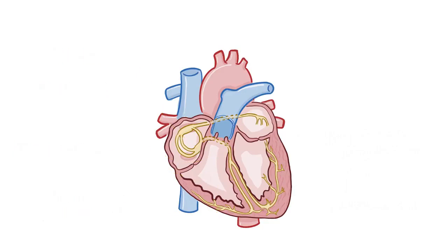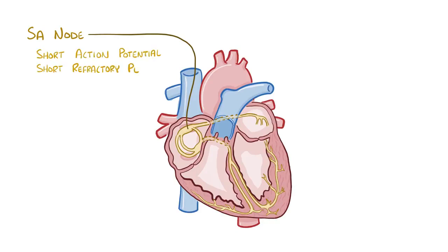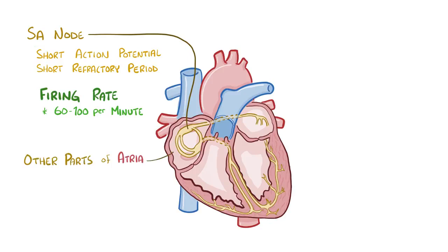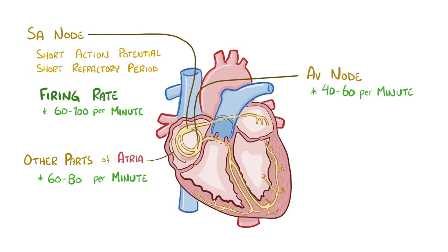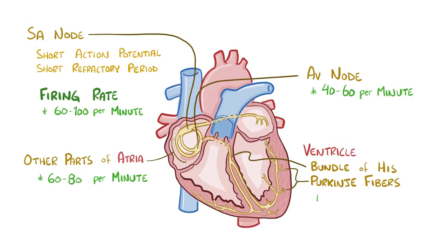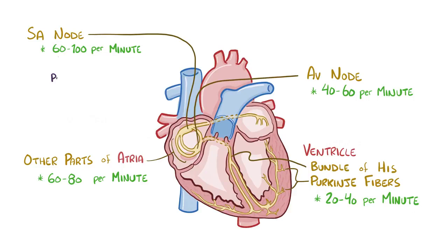If the pacemaker cells in the SA node fail to fire, there's not only a Plan B, but a Plan C and Plan D as well. Pacemaker cells in the SA node have short action potentials and short refractory periods, with a firing rate of 60–100 depolarizations per minute at rest. There are pacemaker cells in other parts of the atria with a slightly slower rate of 60–80 per minute, and pacemaker cells in the AV junction with a rate of 40–60 per minute. If the SA node fires on time, it resets all the other pacemaker cells — that's why it sets the pace.